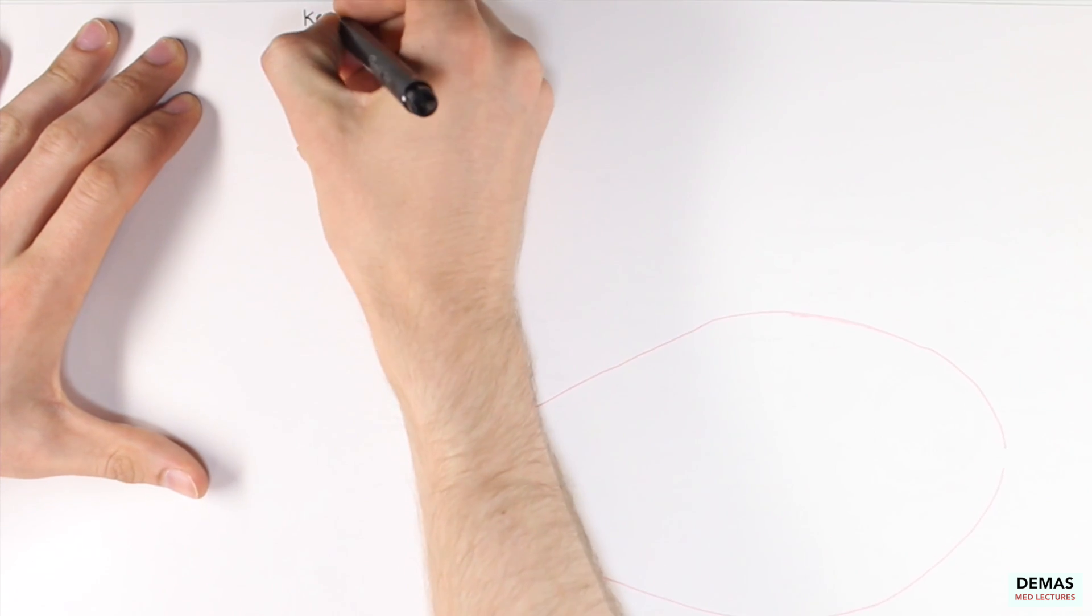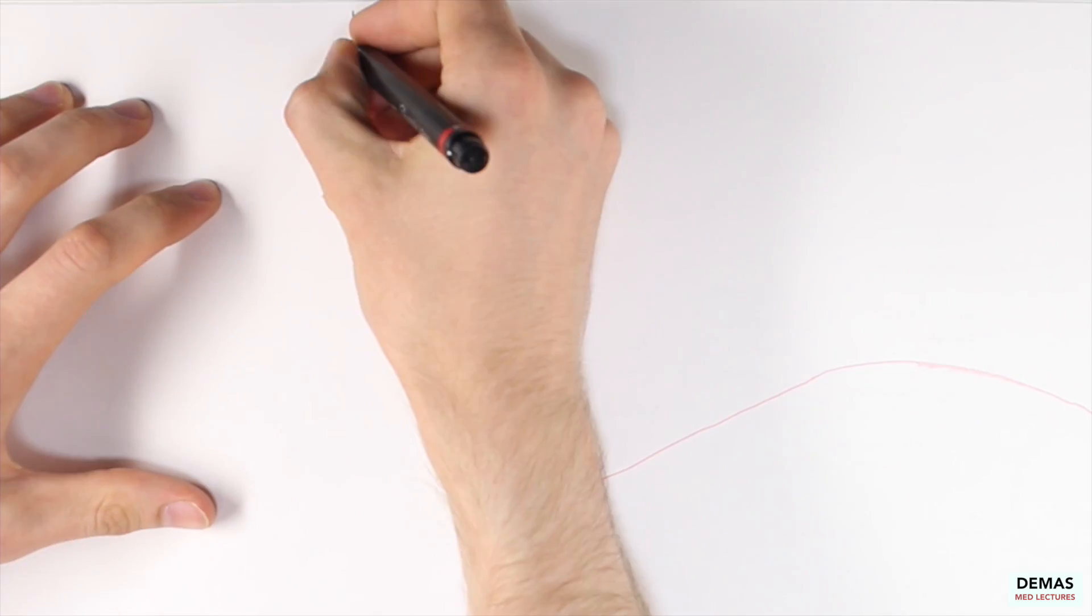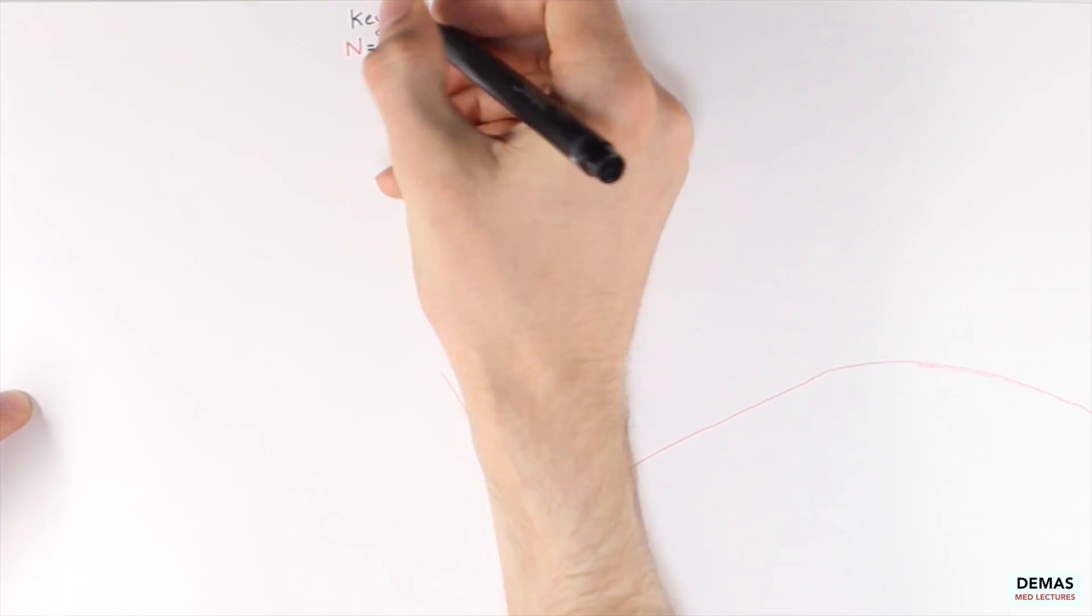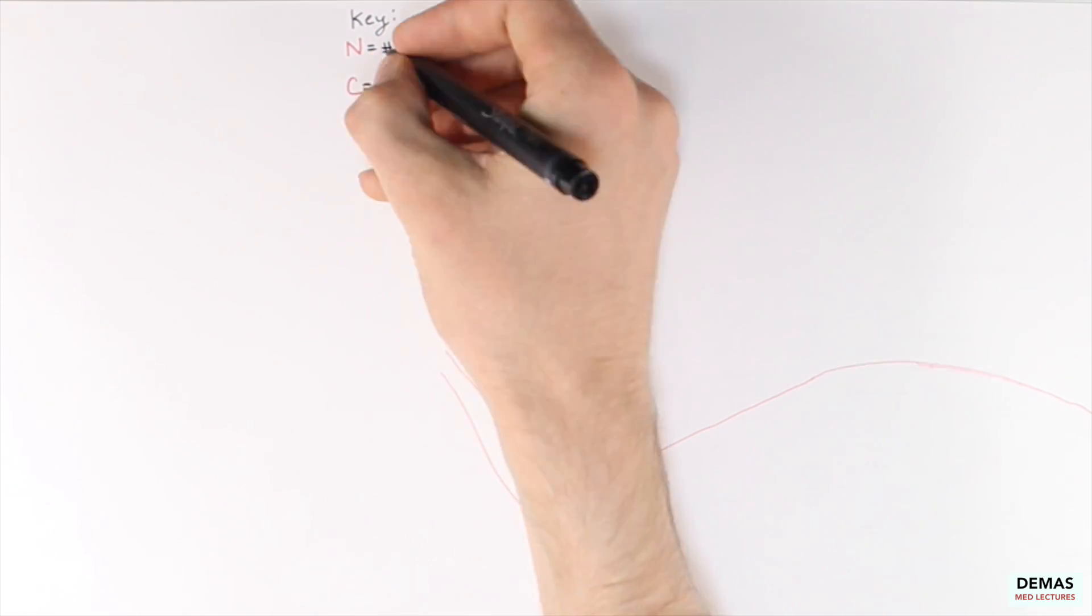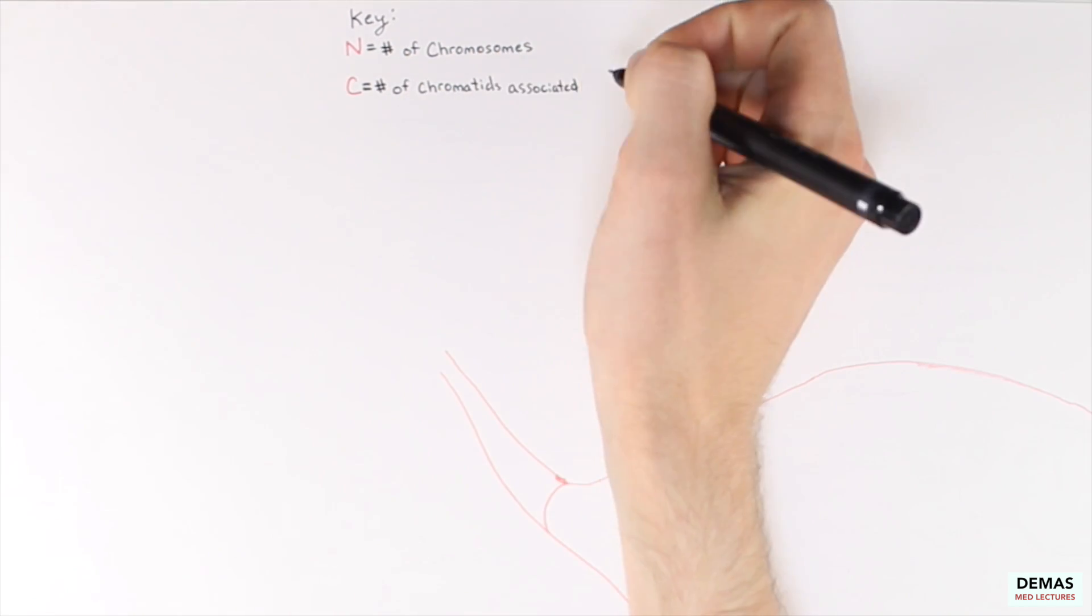Before we discuss the details of the ovary, I would like to point out that I'll be using the N and C notation here that will mirror what you have seen previously in your lectures and is the notation used on board exams. N stands for the number of chromosome sets while C stands for the number of chromatids associated with each chromosome within the cell.